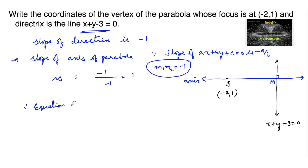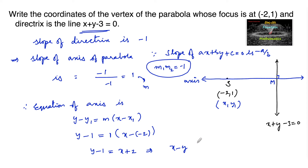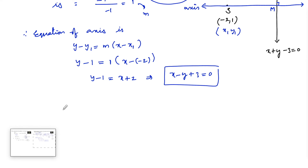The equation of the axis can be found using the point-slope form: y - y1 = m(x - x1). With point (-2, 1) and slope m = 1, we get y - 1 = x + 2, which simplifies to x - y + 3 = 0. So the axis is x - y + 3 = 0 and the directrix is x + y - 3 = 0.